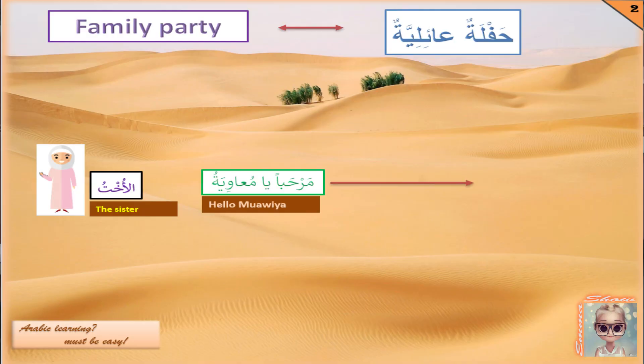So الأخت, the sister, answers: مرحبا يا معاوية. I assume معاوية is his name. Right. The name is difficult to pronounce and strange. I don't really believe that, because the name is famous in our culture and great people in Islamic history had this name. That's fine.